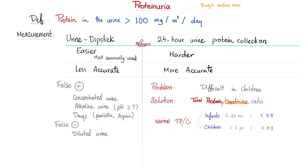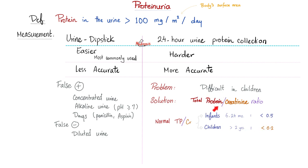Which method is better at measuring proteins in the urine — the urine dipstick or the 24-hour urine collection? Of course, the 24-hour urine collection. I'm collecting your urine in an entire day; it's harder but way more accurate. How do I do it in a child? We will try the total protein to creatinine ratio instead. It should be less than 0.5 in infants, less than 0.2 in children. If it's higher than this, it means there is lots of protein, which is a bad sign.